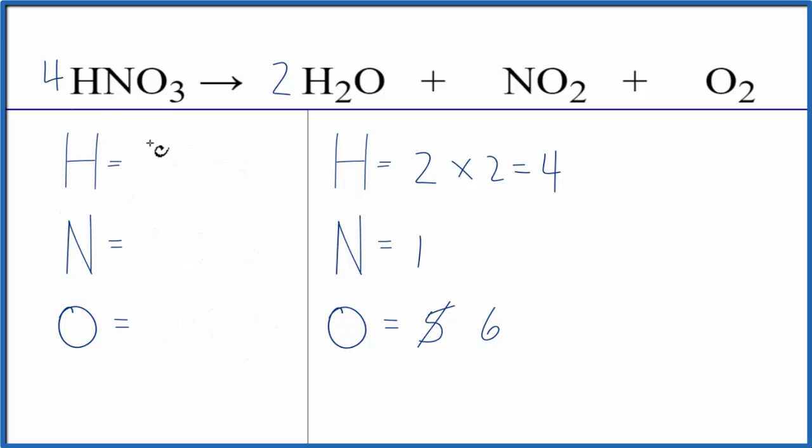So we have one times four, four hydrogens, one times four, four nitrogens, three times four, twelve oxygens.